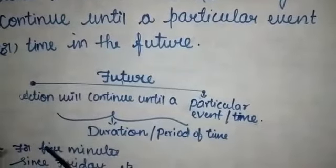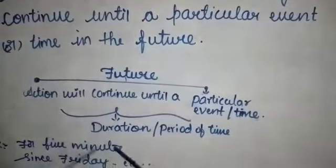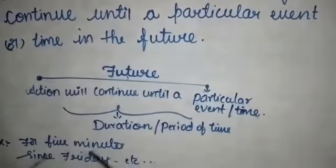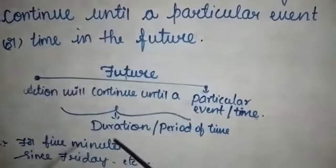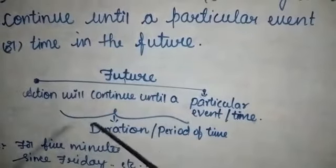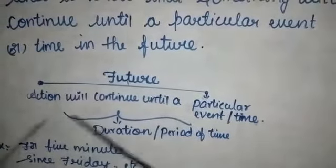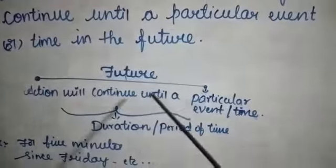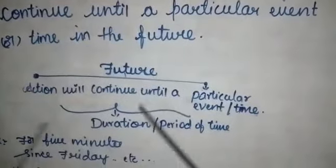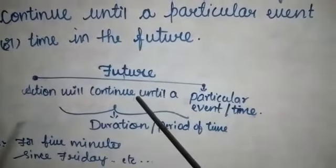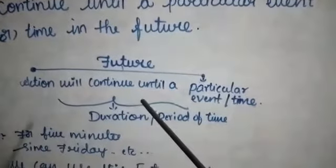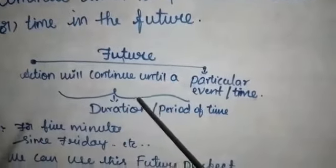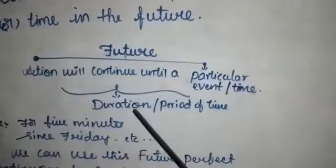For example: for 5 minutes, since Friday, since Monday — the words 'since' and 'for' are used in this particular tense, that is future perfect continuous tense.